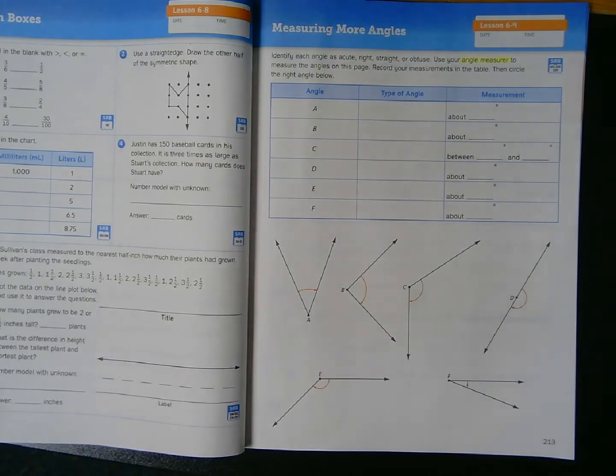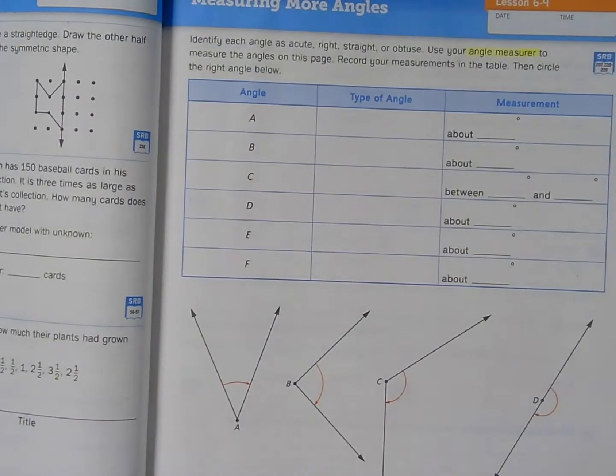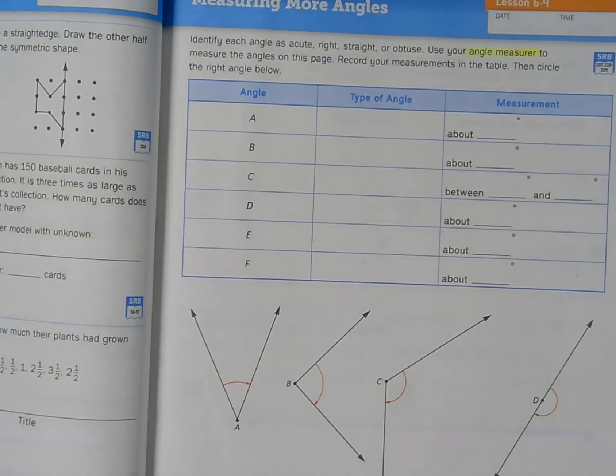Let's read the instructions. It says, identify each angle as acute, right, straight, or obtuse. Use your angle measurer to measure the angles on this page. Record your measurements in the table, then circle the right angle below.